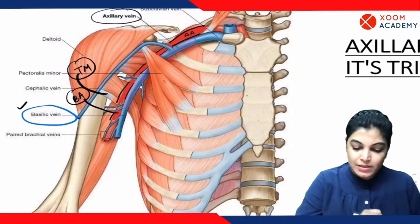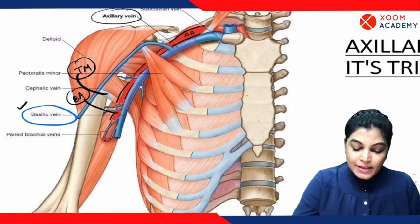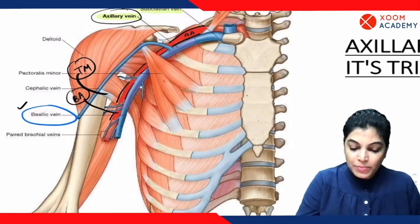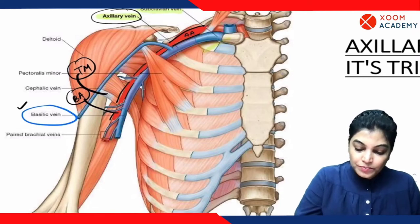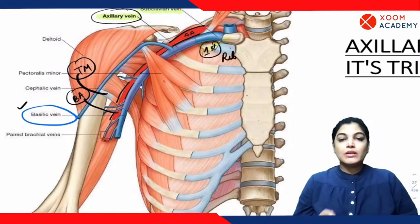The axillary vein drains into the subclavian vein at the level of the outer border of the first rib, as shown in this image.